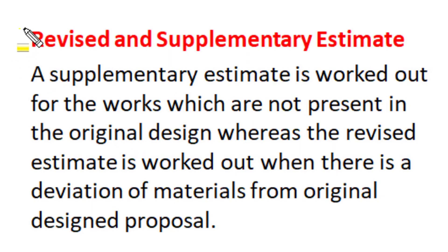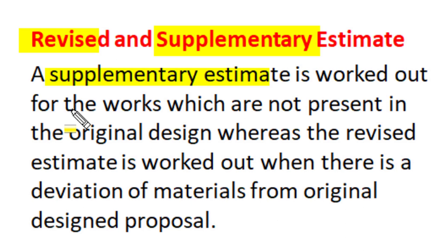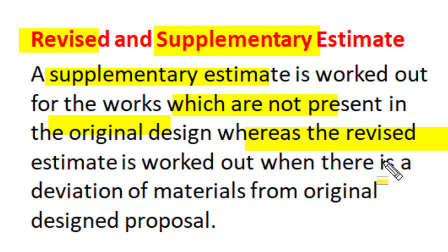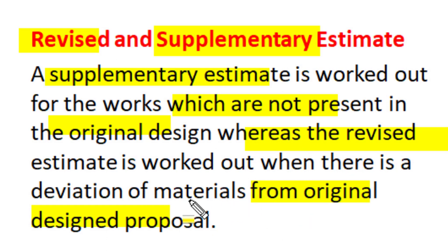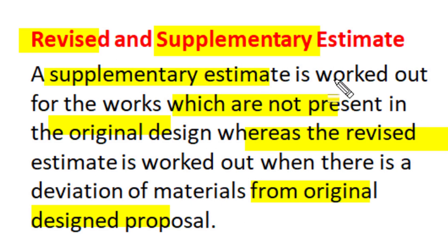One can compare revised estimate and supplementary estimate. A supplementary estimate is worked out for work which is not presented in the original design and needs approval of a higher competent authority. Whereas a revised estimate is worked out when there is a deviation in material or labor cost from the original design proposal without change in design and specification. As the project cost has changed beyond contingency coverage, it needs a revised estimate. But if there is a significant change in project design or details, then a supplementary estimate with all exercises as required in a detailed estimate is worked out.